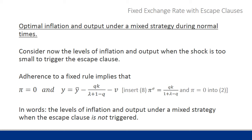We now look at optimal inflation and output under a mixed strategy during normal times, when the shock is too small to trigger the escape clause. We are on the fixed rule, so π equals zero. Output equals ȳ minus kQ/(λ + 1 − Q) minus v, obtained by inserting equation A for rational expectations under the mixed strategy and π equals zero into the aggregate supply curve. These are the levels of inflation and output under the mixed strategy when the escape clause is not triggered.